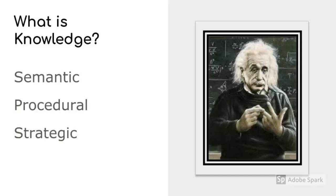Speaking of knowledge, let's talk about how we define it. Gaining knowledge is part of learning, and the overall goal of teaching is to help students gain knowledge, retain it, and transfer it to new contexts. There are three kinds of knowledge: semantic, procedural — for example, how do you calculate 160 divided by 4 — and strategic, meaning what's my plan or how am I going to accomplish my goal?